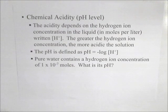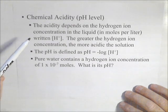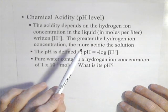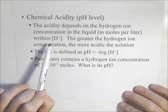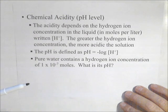In this video, we're going to look at an application of logs that involves chemical acidity, calculating the pH level. The acidity depends on the hydrogen ion concentration in the liquid, given in moles per liter, typically denoted as H+. The greater the hydrogen ion concentration, the more acidic the solution.